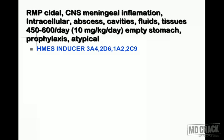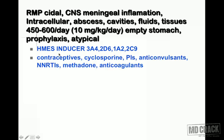Rifampin is a potent inducer of the hepatic microsomal enzyme system (HMES), also called the cytochrome P450 system. The enzyme systems mainly induced include CYP3A4, CYP2D6, CYP1A2, and CYP2C9. Drugs metabolized by these systems will have rapid metabolism and reduced expected effect. A very interesting example is oral contraceptives.